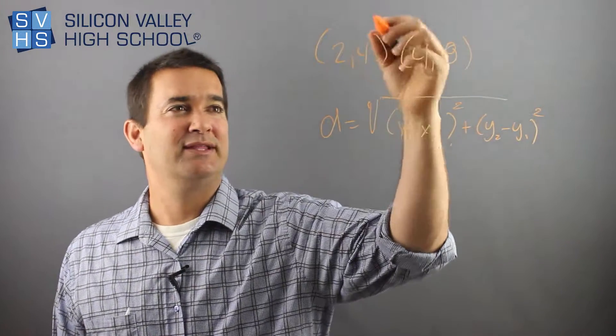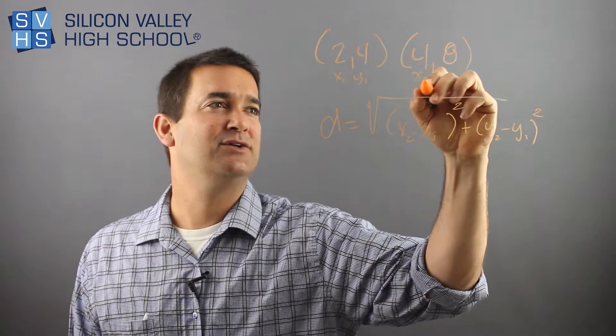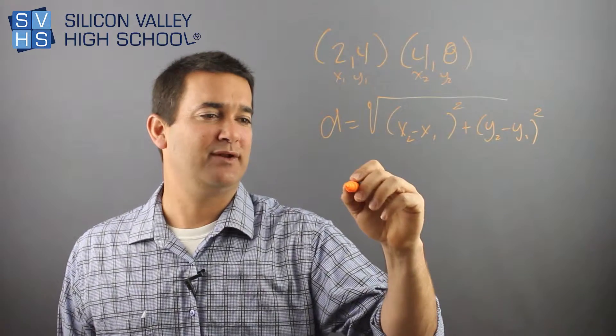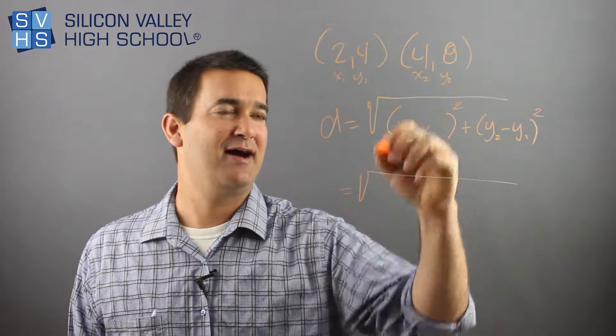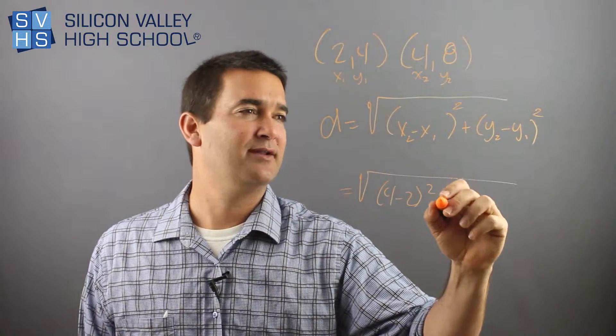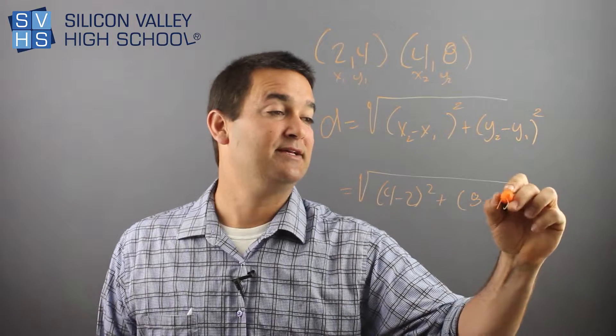So let's do this. If you really labeled these, which I never do, but you could call this x1, y1, x2, y2, right? So now we'd plug them in x2 minus x1. So this is all rooted. You'd have 4 minus 2 squared plus y minus y, 8 minus 4 squared.